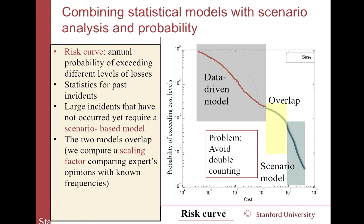Here is the mathematical challenge: we have a zone of small losses, and this is the probability of exceeding different levels of losses. In the zone where we have statistics, that's fine and easy. But there is a zone of very large things that have not happened yet. There we have to do another kind of analysis with scenarios based on statistics for parts of the scenarios and expert opinions for the rest. And we have another zone that we fill with mathematical scaling to connect the two — and that's the only way we can get the whole story.